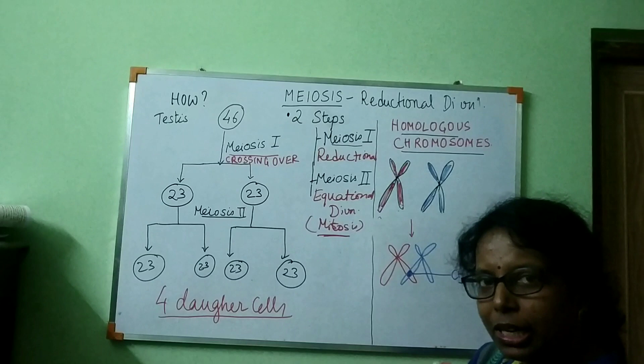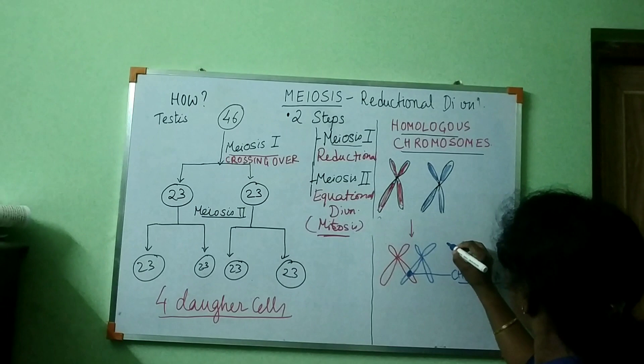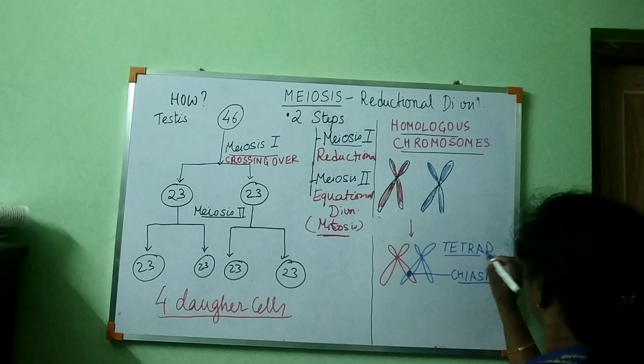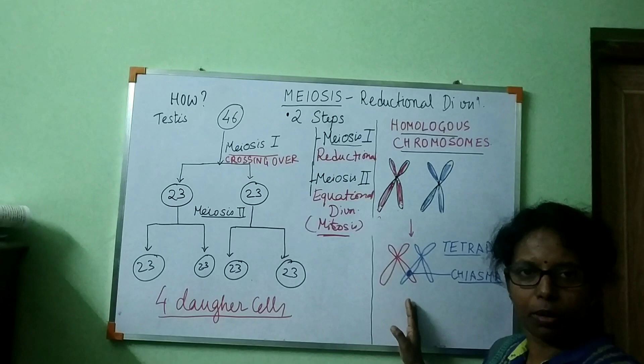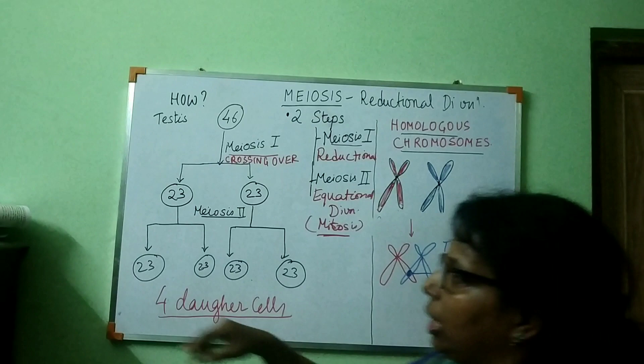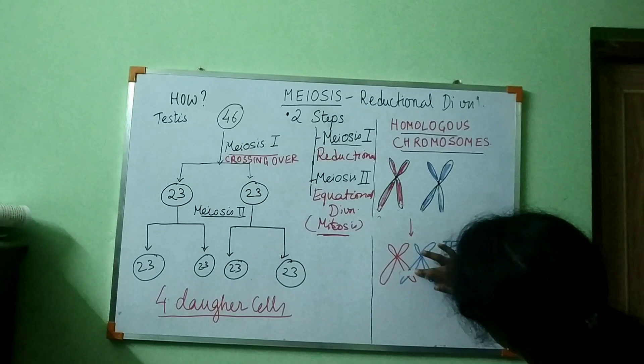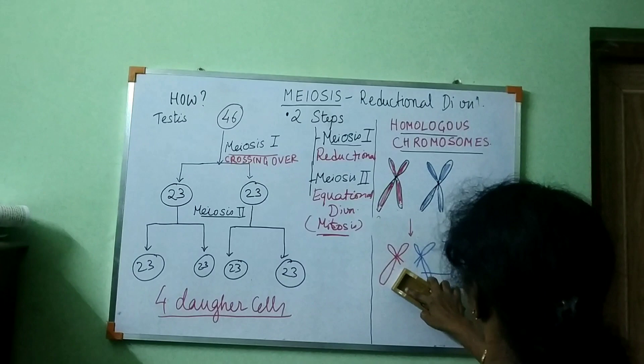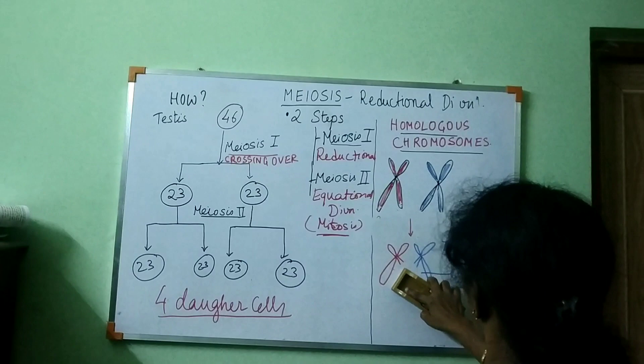This structure where four chromatids lie close together is called a tetrad — 'tetra' means four. After the tetrad forms, breaking and rejoining takes place: this part breaks, and the blue part rejoins with the red part, resulting in a new recombined chromosome.